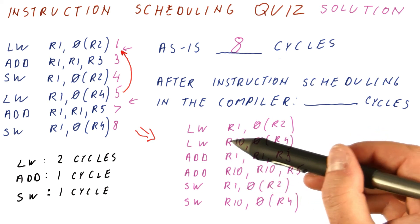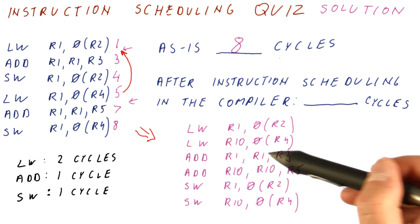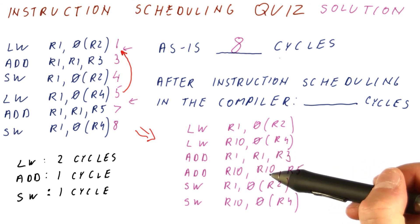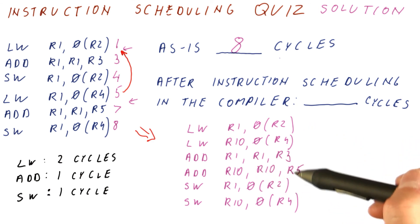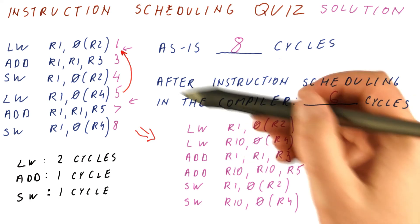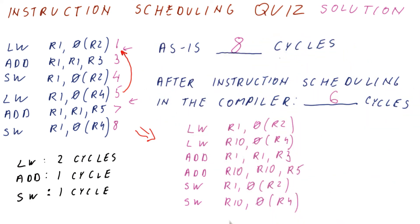And here, R10 is loaded, and then we don't do anything with R10, and then we add to it. So this can be done in six cycles, eliminating both of the stall cycles that we previously had.